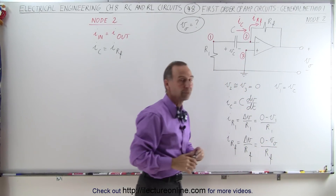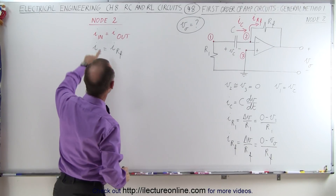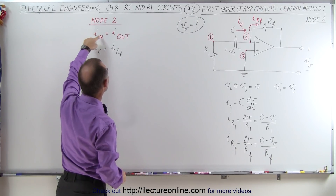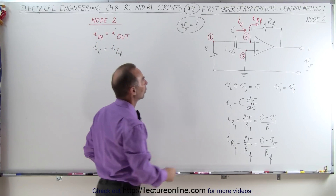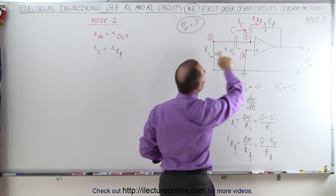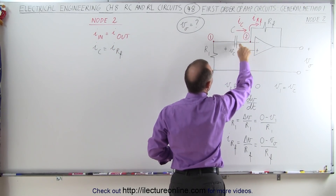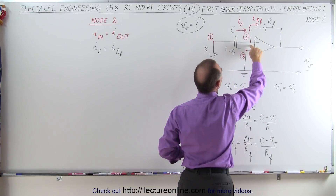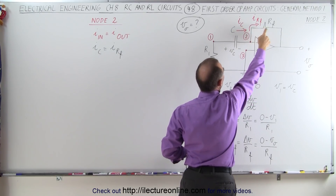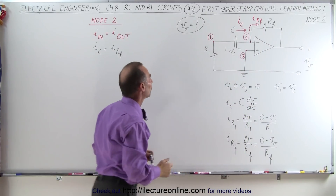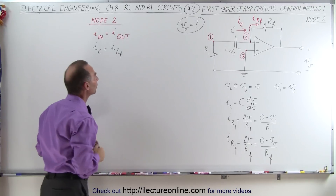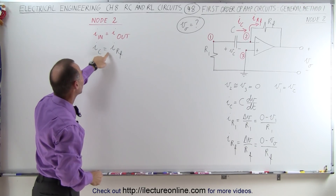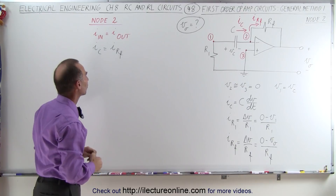So now, when we look at node 2, we want the current into the node to be equal to the current out of the node. The current into node 2 is the current coming from the capacitor, and the current coming out of the node is the current through the feedback resistor. So we set those equal to each other: the current through the capacitor is equal to the current through the feedback resistor.